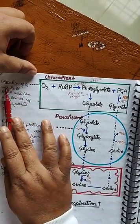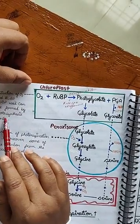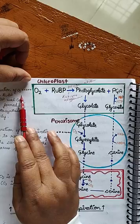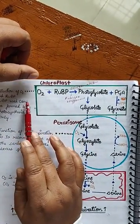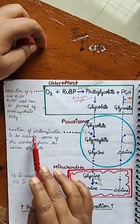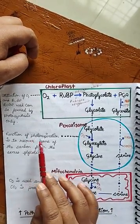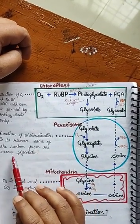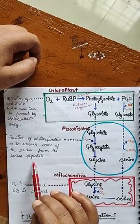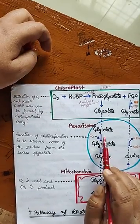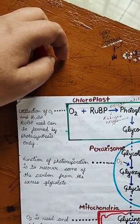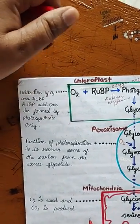तो this whole cycle is known as photorespiration। यहाँ पर सबसे पहले RUBP ने oxygen को utilize किया। जो RUBP photosynthesis में यूज होता था, उसने oxygen का level बढ़ने पर CO2 के साथ reaction न करके oxygen के साथ reaction किया। Peroxisome में photorespiration carbon को recover करेगा excess glycolate से। और mitochondria में oxygen यूज होगी और CO2 release होगी।